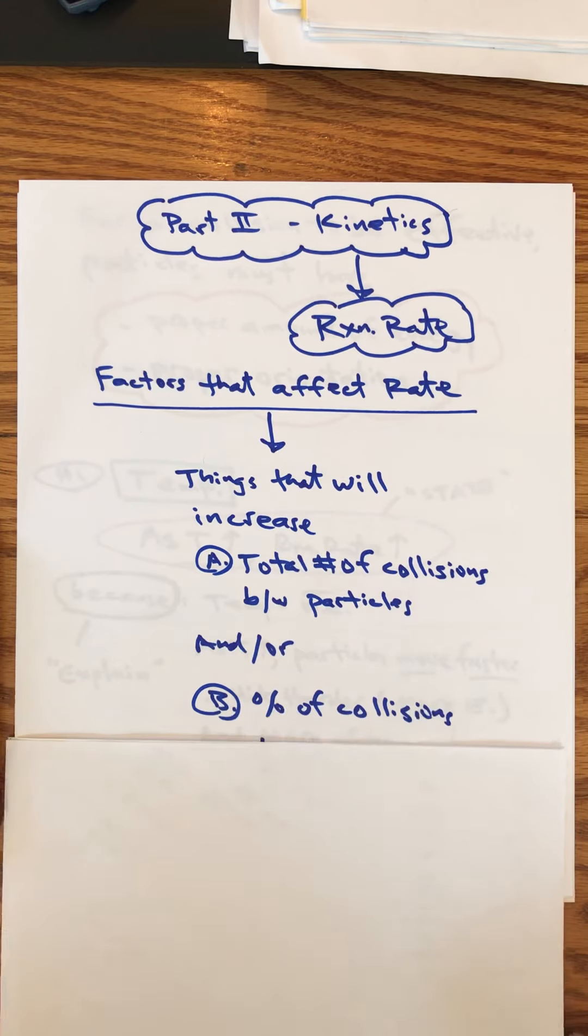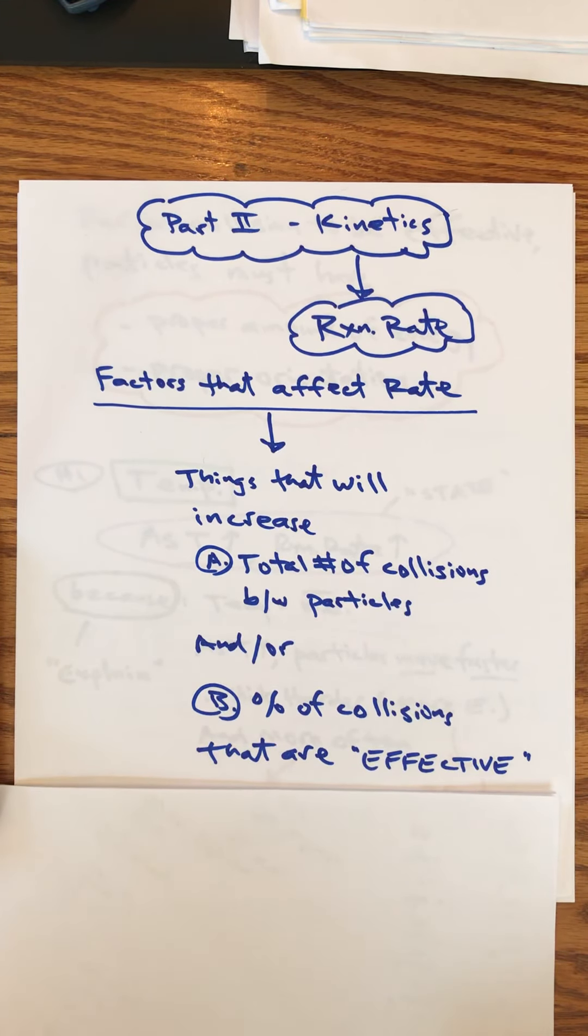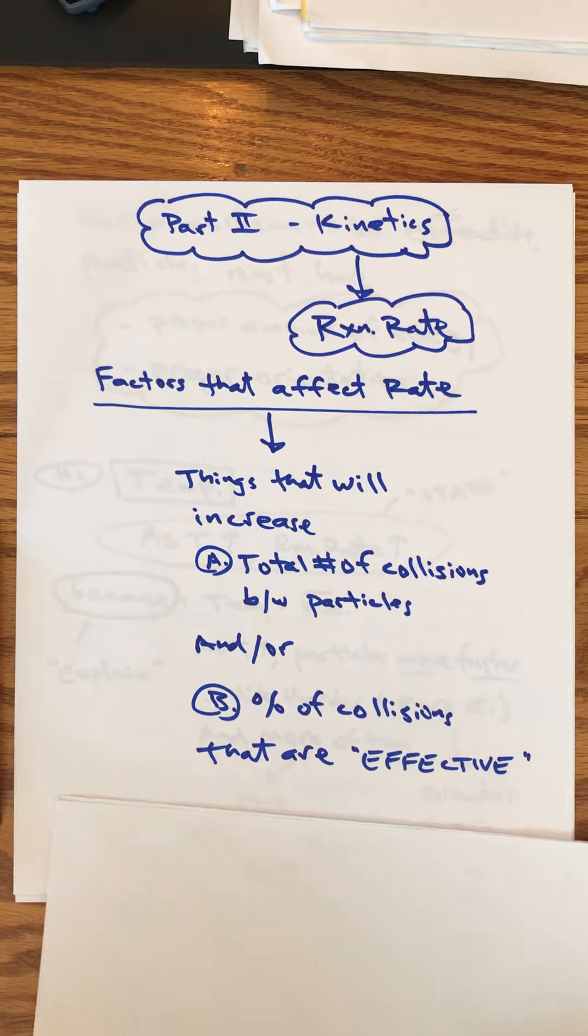You can also increase the total number of collisions that are effective. Not every collision is going to work. If you think of collisions between particles, if you're smashing a couple eggs together you can make some scrambled eggs. If you just tap the eggs together there's probably not enough energy there to break the shell, whereas if you smack them hard you've got enough energy to get the reaction going.